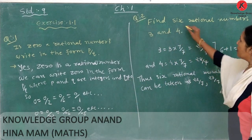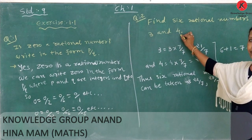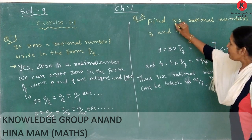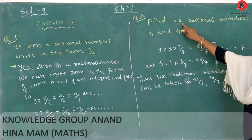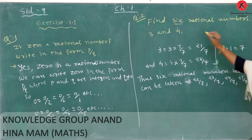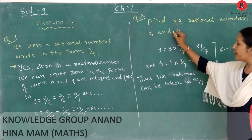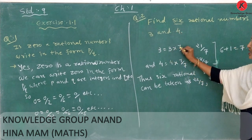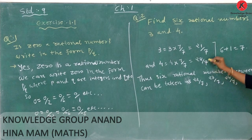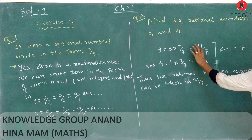Question number 2: Find 6 rational numbers between 3 and 4. How many rational numbers? 6. We take the denominator as 6 plus 1, which equals 7. Therefore, 3 multiplied by 7 over 7 gives 21 over 7, and 4 multiplied by 7 over 7 gives 28 over 7. We write numbers between 21 and 28.